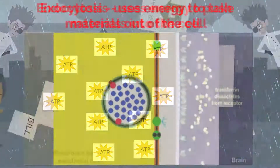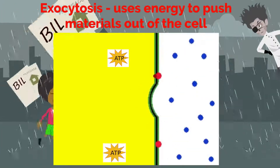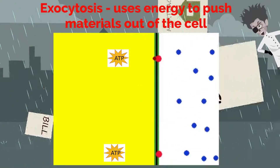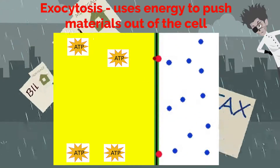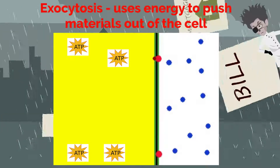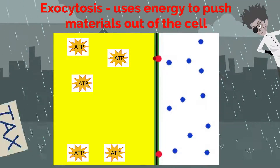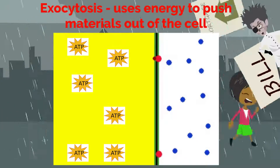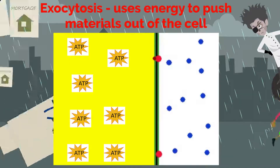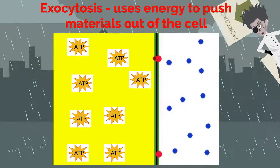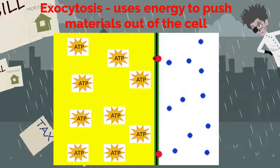In exocytosis, ATP is used for vesicles to transport materials to the cell membrane and fuse with it to get materials out of the cell. Exocytosis occurs when a cell produces substances for export such as a protein, or when the cell is getting rid of a waste product or a toxin.